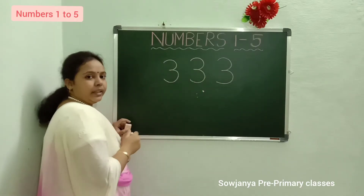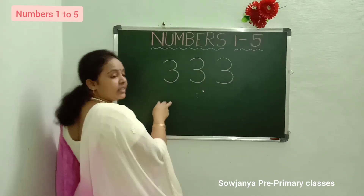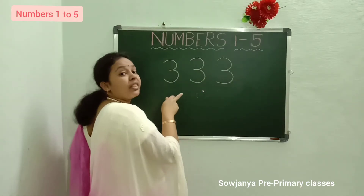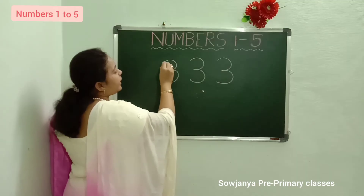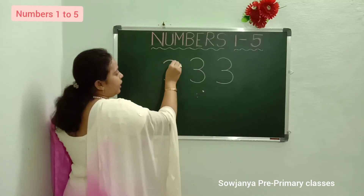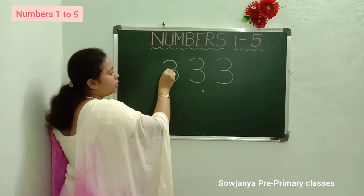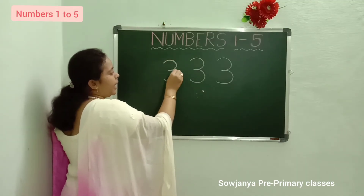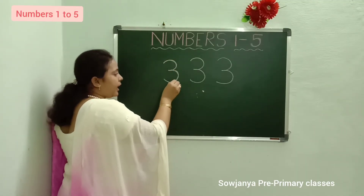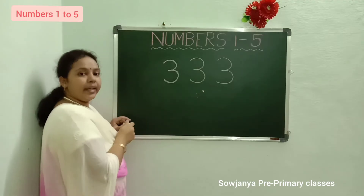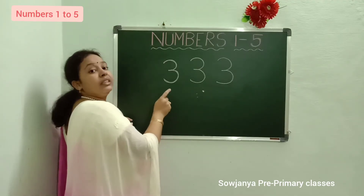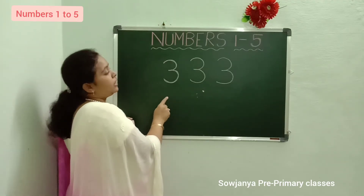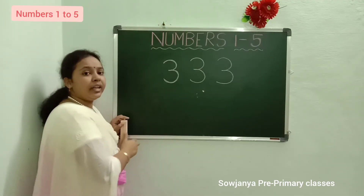3. What is this number? 3. How to write? Left curve, come back and write left curve. 3. What is this number? 3. Okay children?